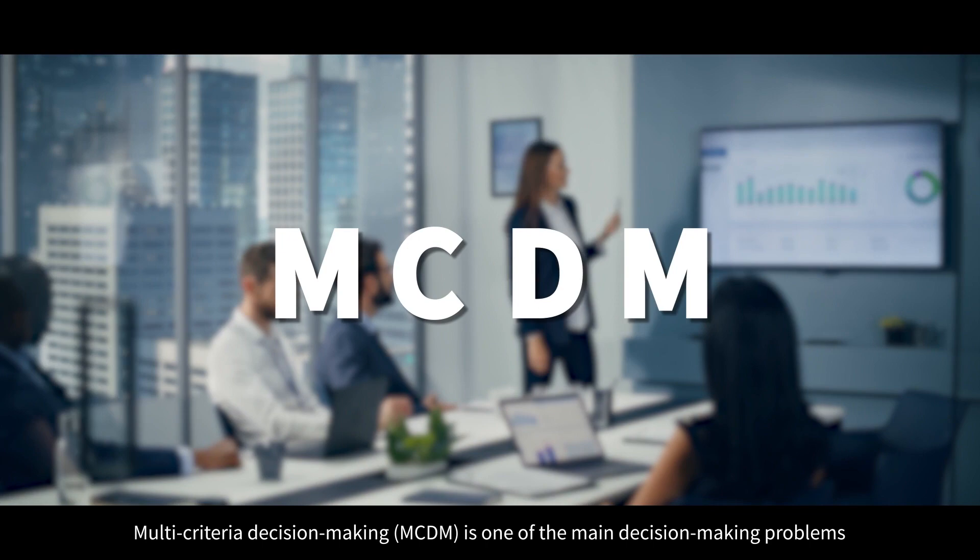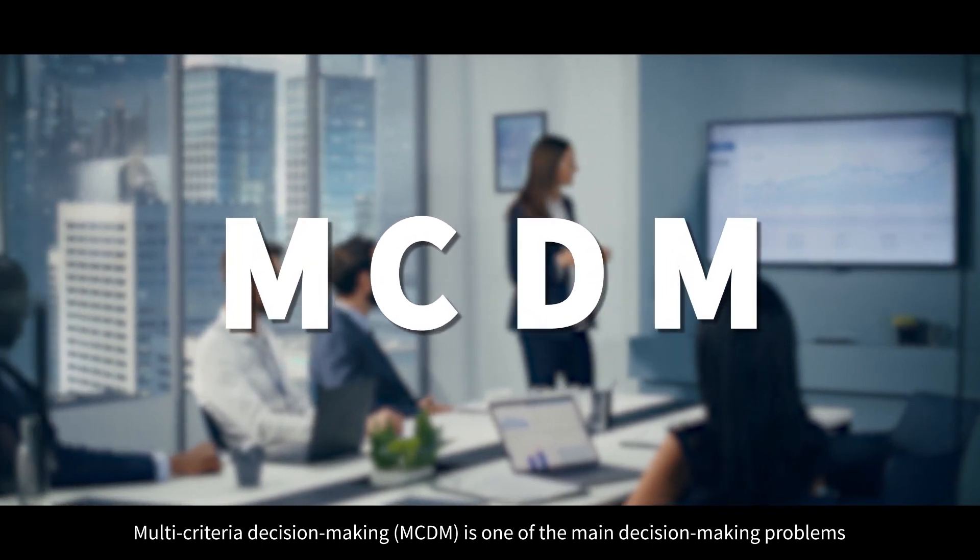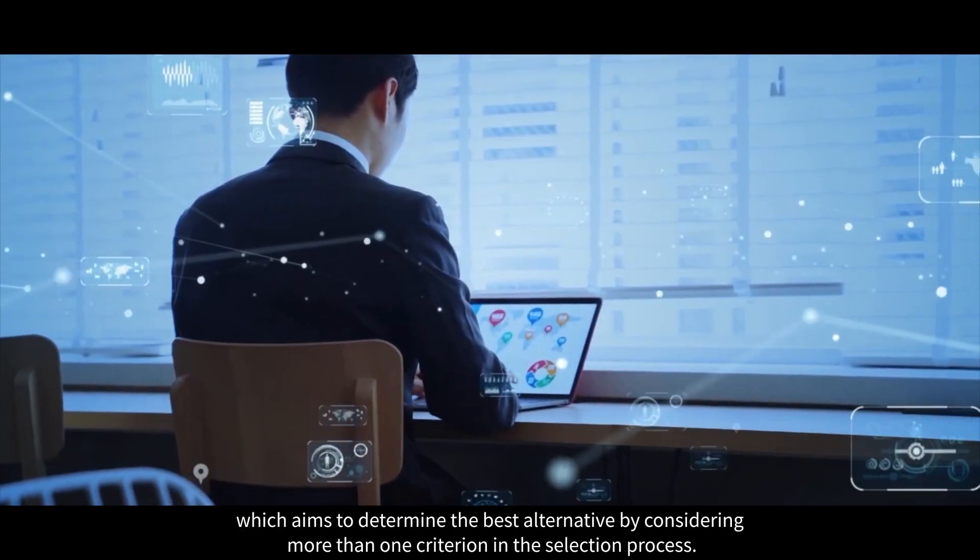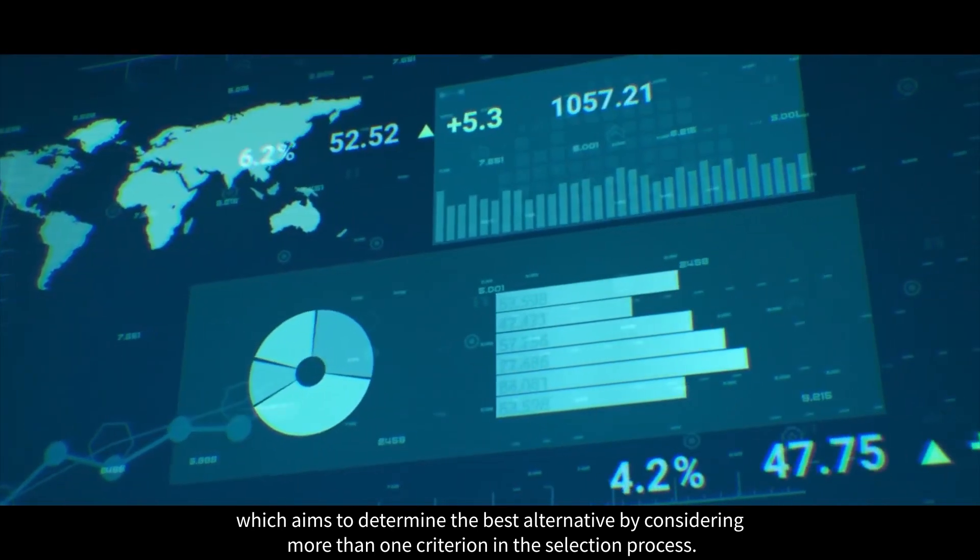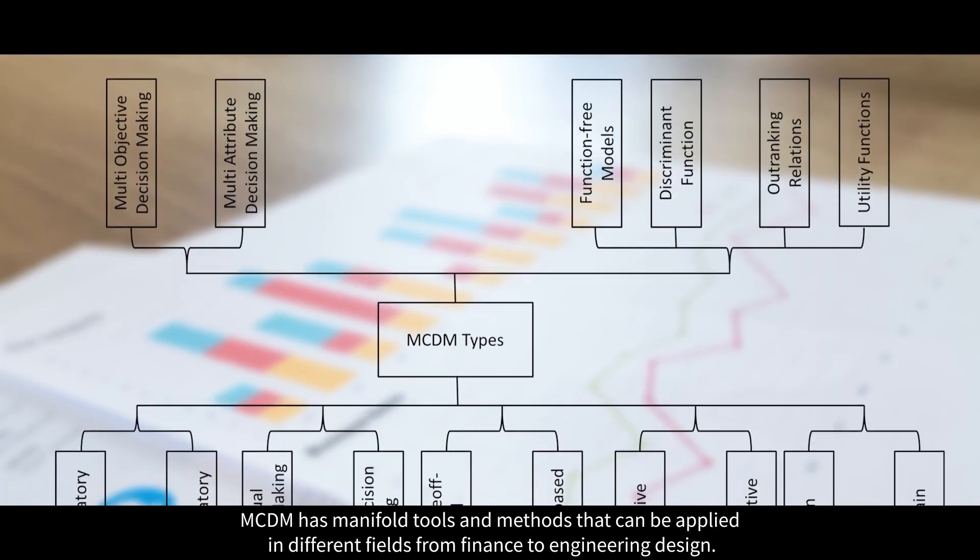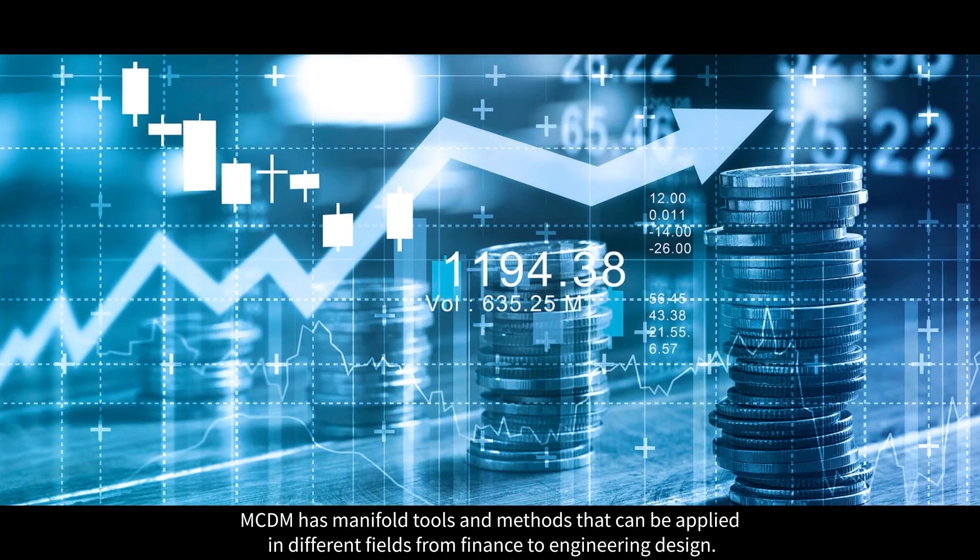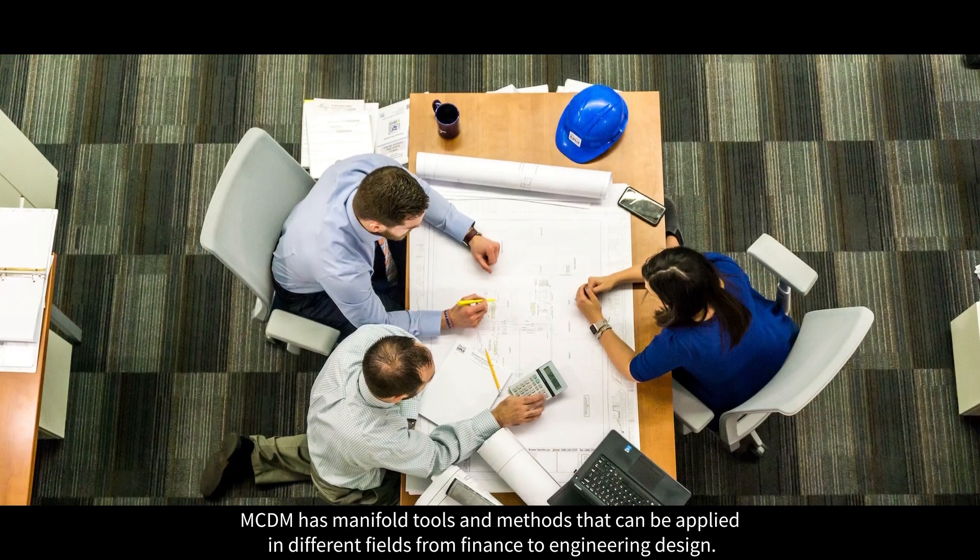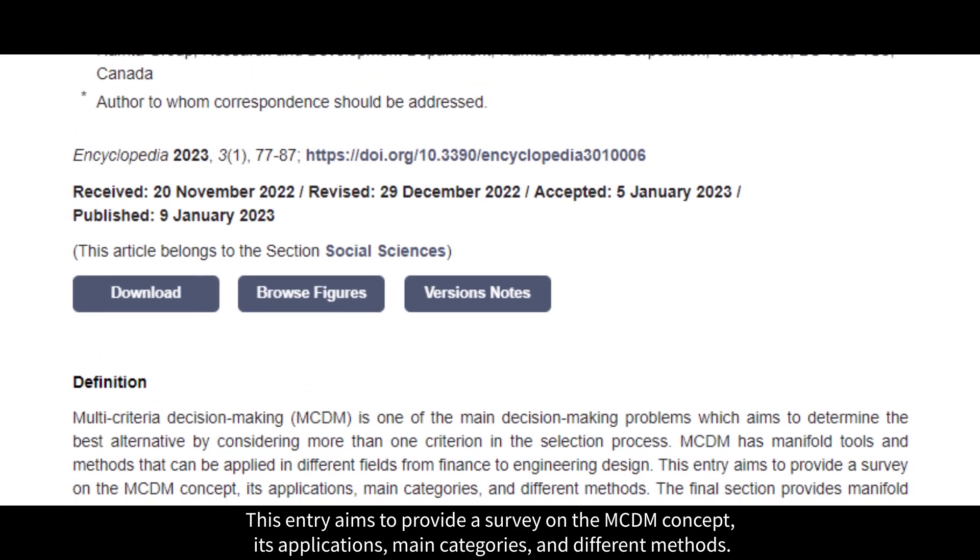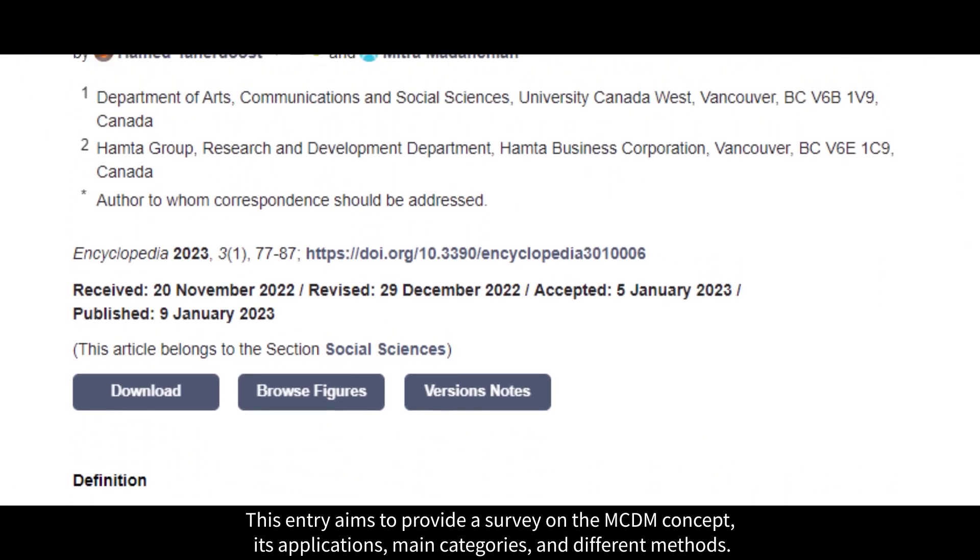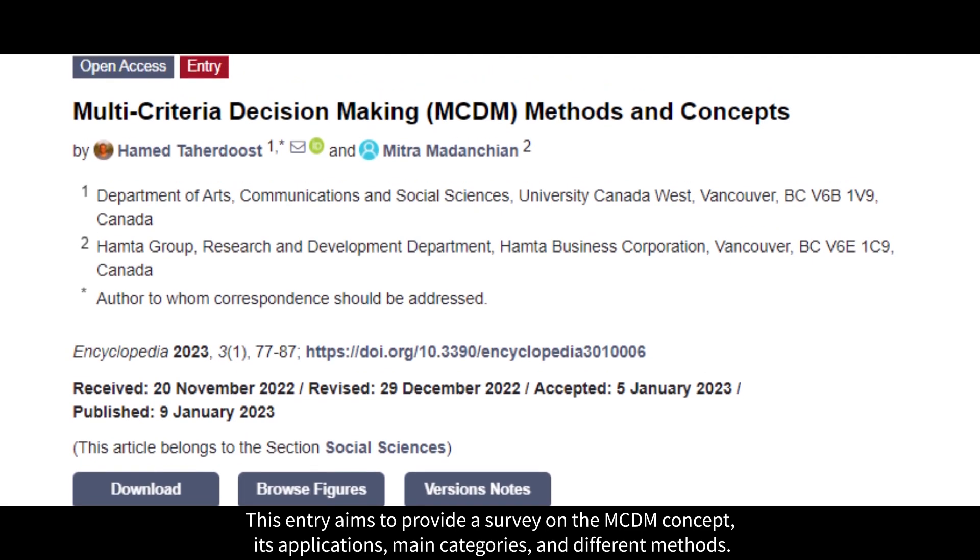Multi-criteria decision-making is one of the main decision-making problems which aims to determine the best alternative by considering more than one criterion in the selection process. MCDM has manifold tools and methods that can be applied in different fields from finance to engineering design. This entry aims to provide a survey on the MCDM concept, its applications, main categories, and different methods.